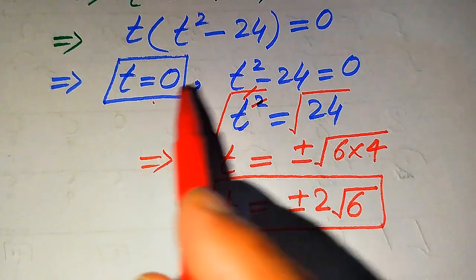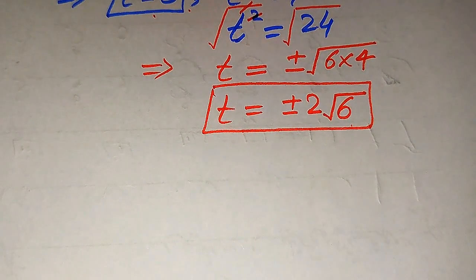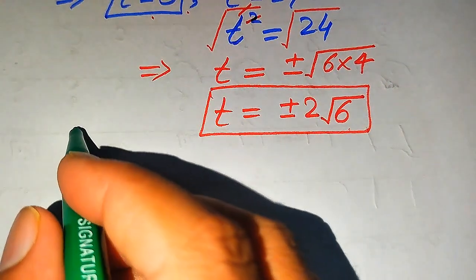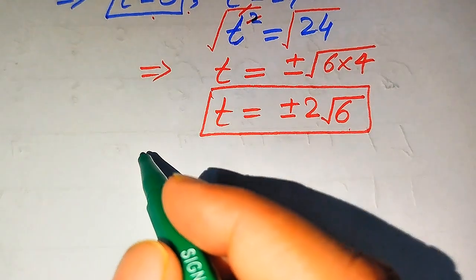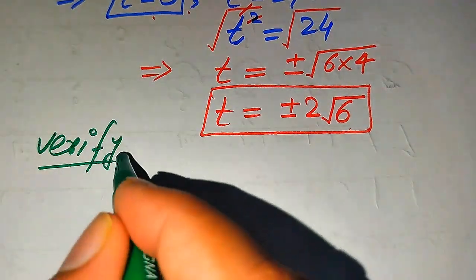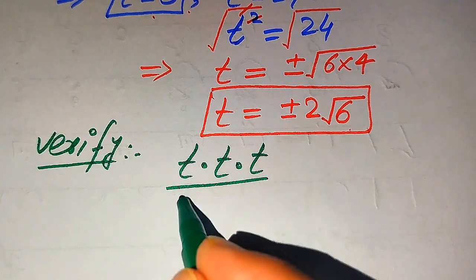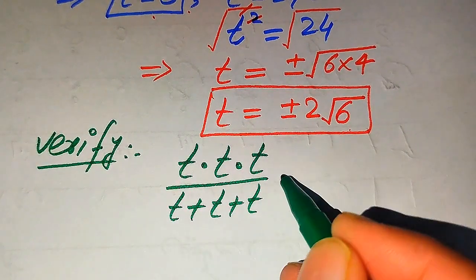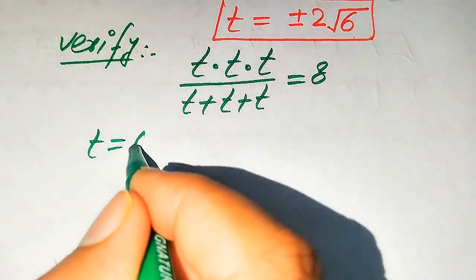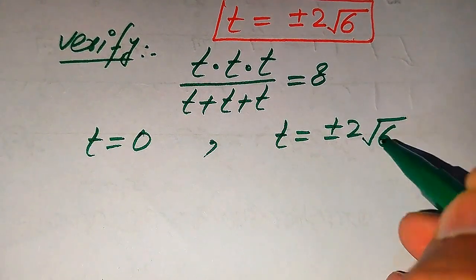We have three roots: t equals zero, and t equals plus or minus 2 times square root of 6. We need to verify whether these roots satisfy the given equation or are extraneous roots. We copy down the given equation: t times t times t divided by t plus t plus t equals 8, and we will verify each root.